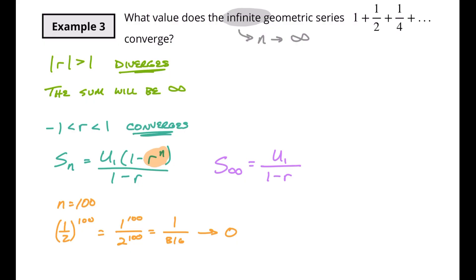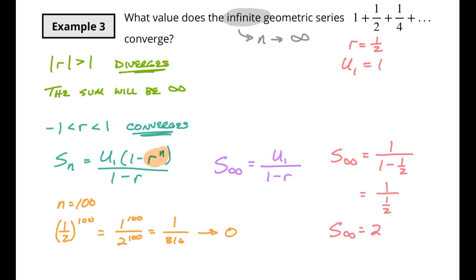That's the infinite geometric series formula, and all three formulas are in your IB formula booklet — you just need to know when to use them. For our sequence 1 plus 1 half plus 1 fourth, r equals 1 half and u of 1 equals 1. So S to infinity equals 1 over 1 minus 1 half, which is 1 over 1 half, which equals 2. It seems strange that you get a specific value, but that's what happens when you converge — you're adding smaller and smaller pieces.